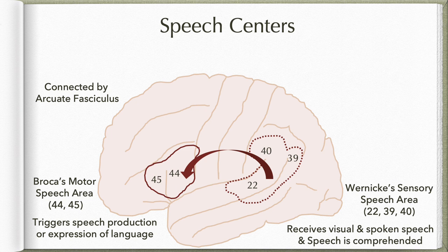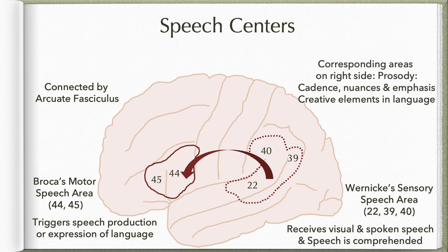These centers are present in only one hemisphere, so in most right-handed people they are located in the left hemisphere. The corresponding areas on the right side are involved in prosody — that is, they are sensitive to cadence, which is any change in the inflection or intonation of words.